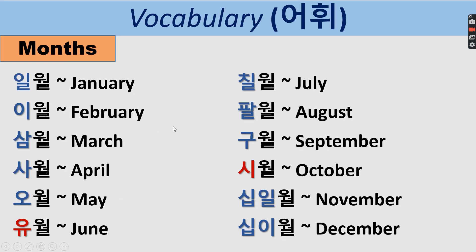Now we will learn the months of the year — these are vocabulary. We have 1월 for January, 2월 for February, and so on. This is easy because you just need to remember the Sino-Korean number vocabulary: 일, 이, 삼, 사, 오, 육, 칠, 팔, 구, 십. After the number, you add 월.